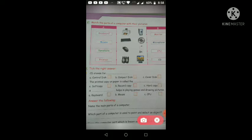First, there are two columns, A and B. I am reading column A. First one is K-E-Y-B-O-A-R-D, keyboard. Where is the picture of keyboard? That one, that is keyboard. Next, M-O-U-S-E, mouse. We are going to match it with mouse. Here is mouse.